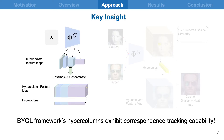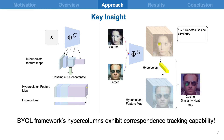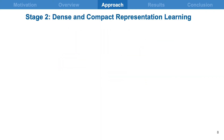This is achieved by first extracting hypercolumn feature maps of both source and target images. The hypercolumn feature vector corresponding to the point to be tracked in the source image — the right eye in this example — can be rolled over the hypercolumn feature map of the target image to find the cosine similarity. The heat map shows the highest similarity with the right eye region in the target image.